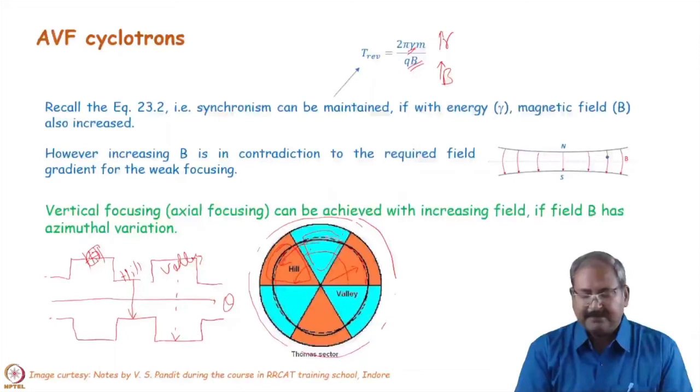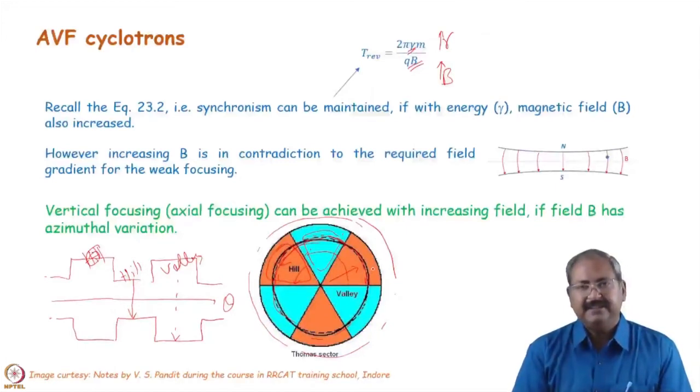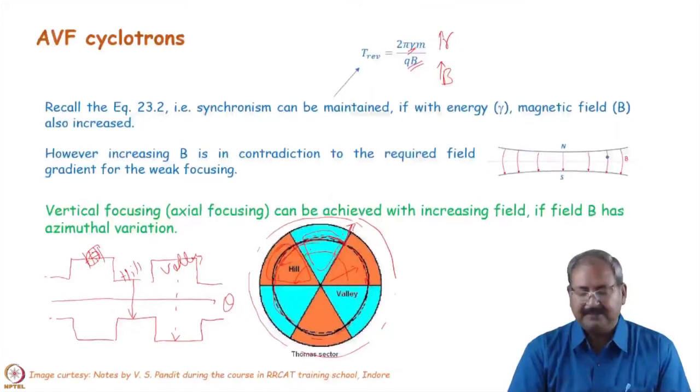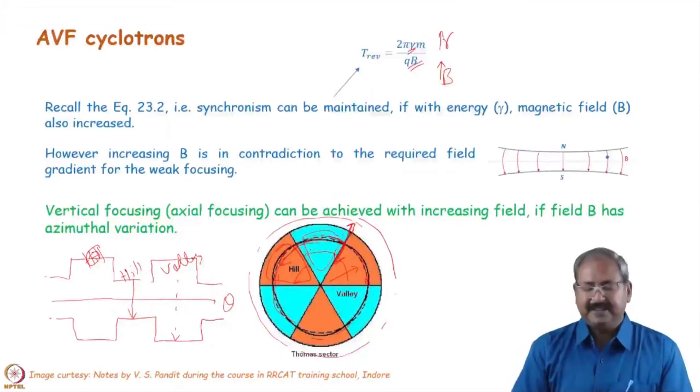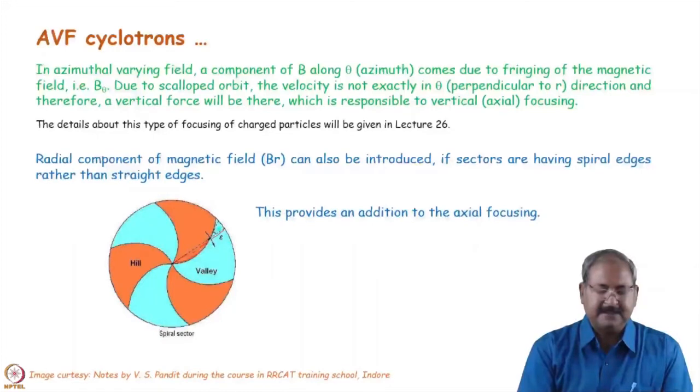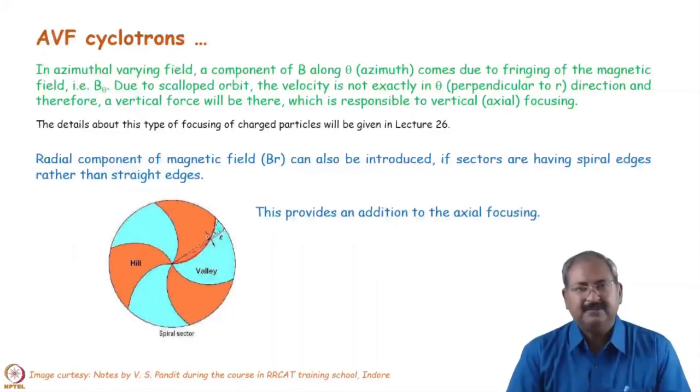So, here, instead of perfect circle, here the magnetic field will cause a small radius of curvature because it is strong and here radius of curvature will be larger for the path. So, instead of complete circular path, it has a scalloped type of orbit and here you can see that V theta and B theta has certain angle between them and this leads to vertical focusing. So, if anyhow we can generate a BR means magnetic field in this direction also, then vertical focusing can be even stronger and this can be also done if instead of straight sector, we make the spiral sector. In spiral sector, we have now B theta as well as BR.